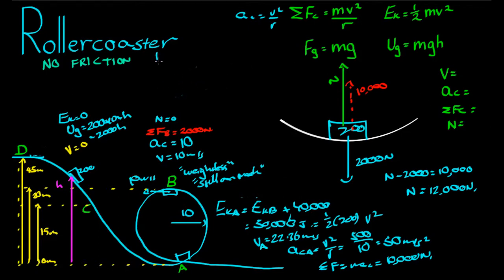So what we can say is that the UG at, we'll just say this is S, at S, is equal to the kinetic energy at A, because all the gravitational potential energy became kinetic energy. UGS is equal to 2,000 H. So we're just saying UG at S there, not UG times S. So that is equal to, what is the kinetic energy at A? 50,000 joules. So if we divide 50,000 by 2,000, we get H is equal to 25 meters.